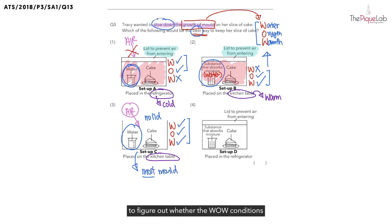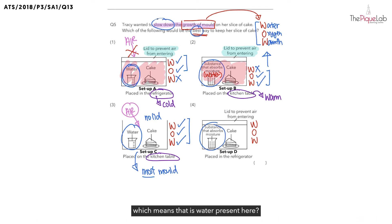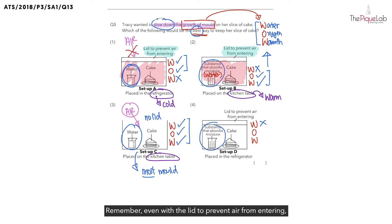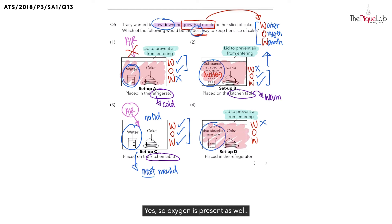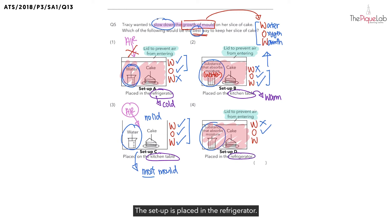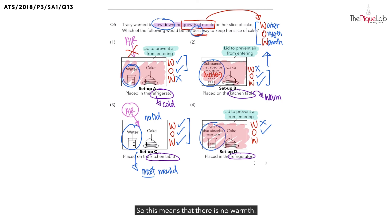Let's now take a look at option 4 to figure out whether the WOW conditions are present here as well. This setup has the substance that absorbs moisture, which means there is no water present here. What about oxygen? Remember, even with the lid to prevent air from entering, oxygen would still be present in the container. So oxygen is present as well. What about the last one, warmth? The setup is placed in the refrigerator. The refrigerator is cold, so this means that there is no warmth. You would realize that setup D has only 1 out of the 3 conditions needed for mold to grow.